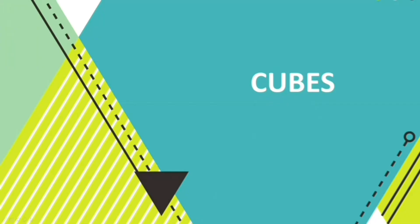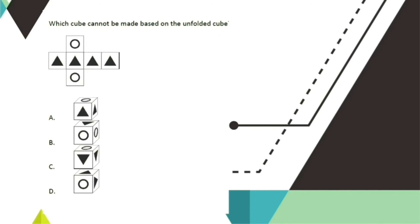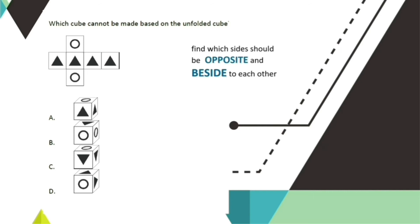Let's move on to cubes. Which of the cubes cannot be made based on the unfolded cube? The first thing you must do is imagine how the figure should be folded to form the cube, then find which sides are opposite and beside each other. When you fold this figure into a cube, the two circles should be opposite each other. In letter B, the circles are shown beside each other, which violates our observation. So the answer for this problem is letter B.